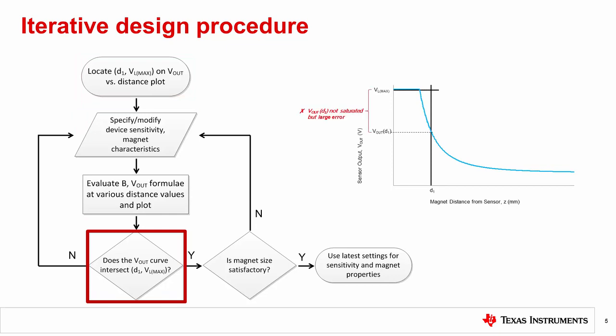If there is a large error between Vout at D1 and VL max, then increase sensitivity or use a bigger magnet. Now plot the new Vout versus distance curve.